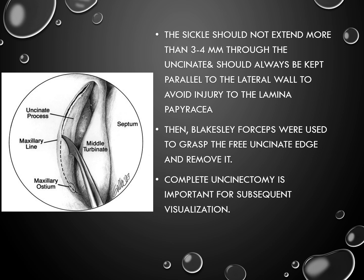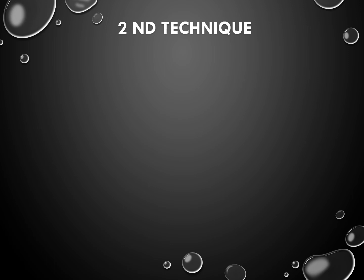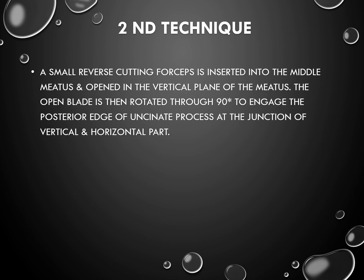Then using a Blakesley forceps, we have to grasp it at the free edge and remove it. Complete uncinectomy is important for subsequent visualization. The second technique is where a small reverse cutting forceps is inserted into the middle meatus and opened in the vertical plane of the meatus. The open blade is then rotated through 90 degrees to engage the posterior edge of the uncinate process at the junction of the vertical and horizontal part.